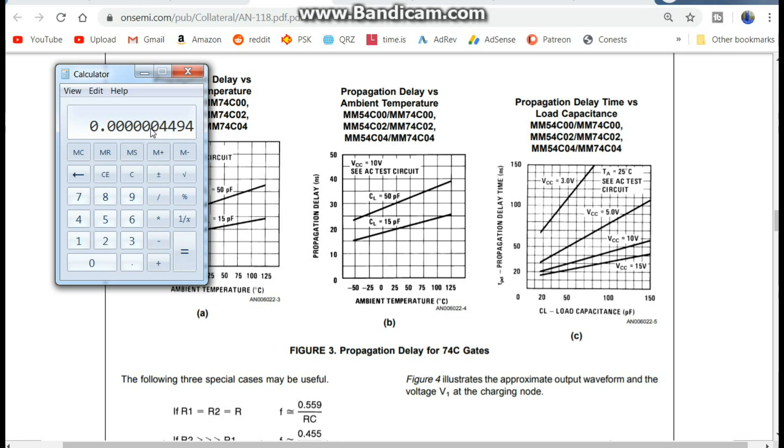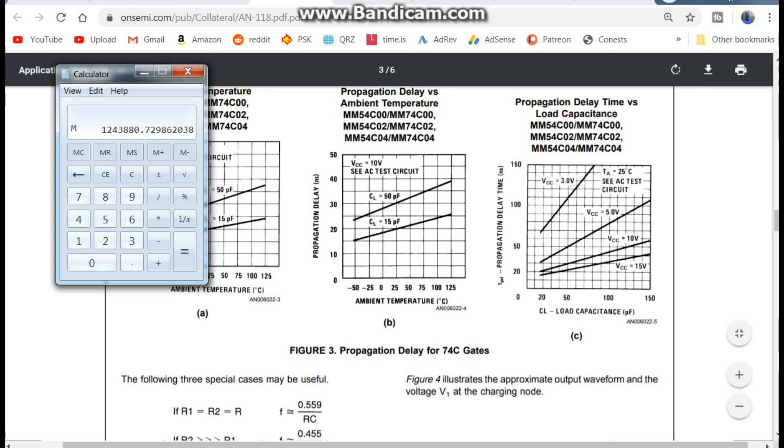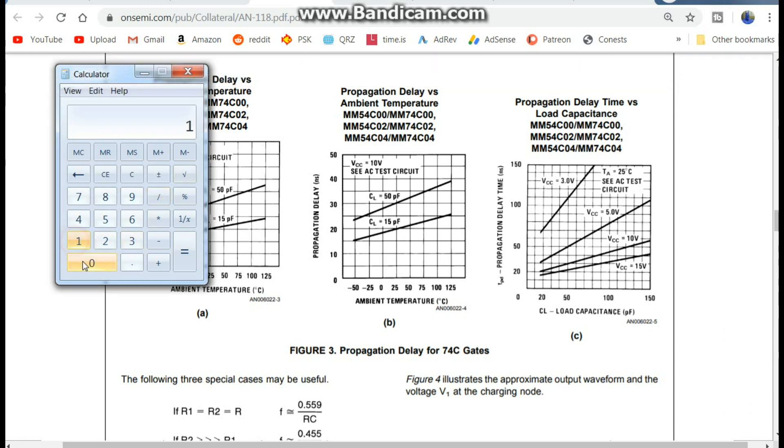We'll put that in memory. Then we'll say 0.559 divided by memory readout equals our formula. That's not right. I think I put in one too many zeros. Let's try it again. 1K times 4494 equals, put that in memory. And then 0.559 divided by what's in the memory equals... There we go.